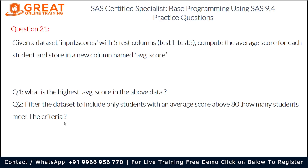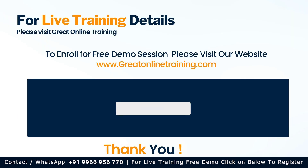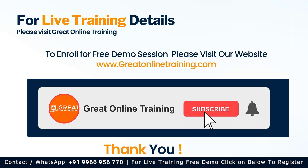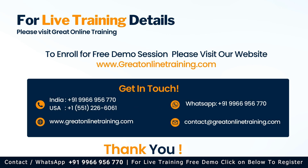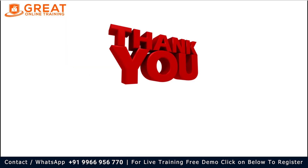So the second question answer is 11 — 11 students meet the criteria. The first question answer was 95 (the highest average score) and the second question answer is 11 observations, meaning 11 students. If you have any doubts, please comment in the comment box. If you liked this video, please like, share with friends and colleagues who need SAS certification, and visit the Great Online Training channel. Thank you for watching.